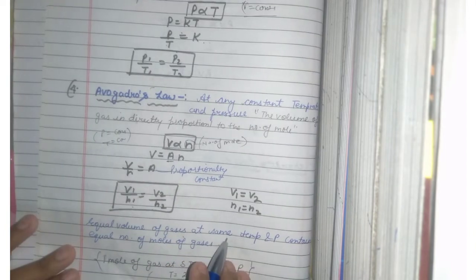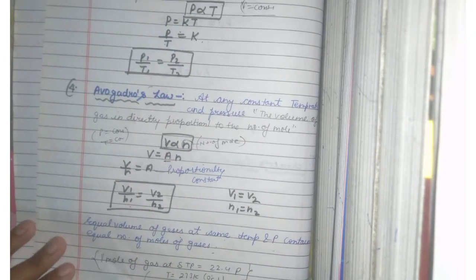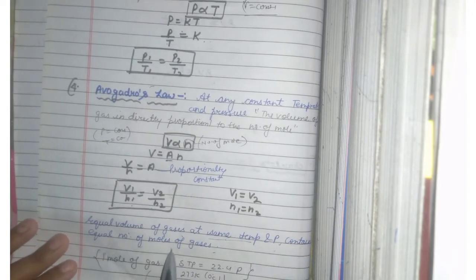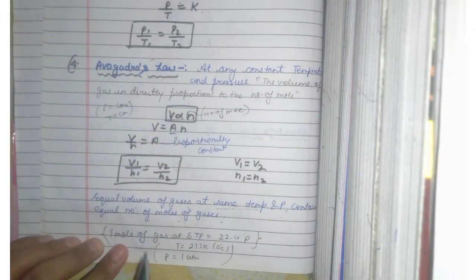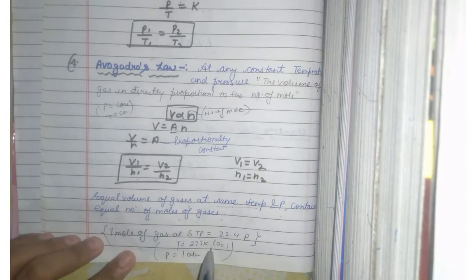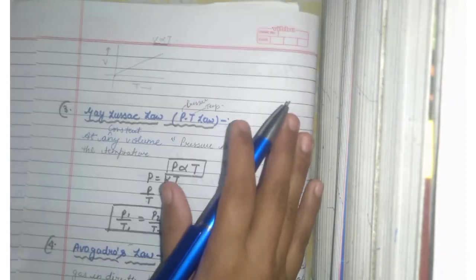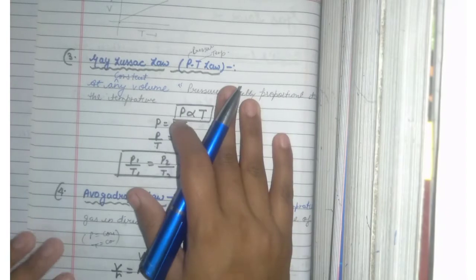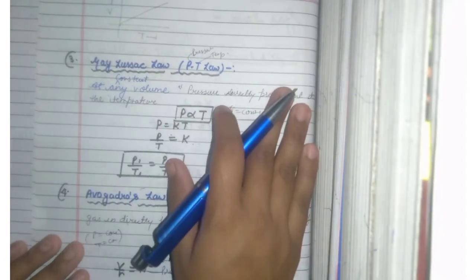Equal volume of gas at same temperature and pressure contain equal number of moles of gases. If we look at standard temperature and pressure, 1 mole gas is 22.4 liters, temperature is 273 Kelvin, and pressure is 1 atm. This was 4 most important laws. I hope that you will understand. If you have a little help from this video, please like this video, subscribe and share. Thank you so much for watching.